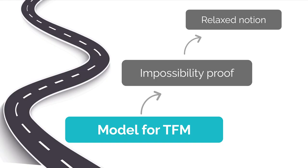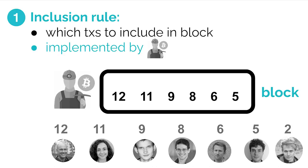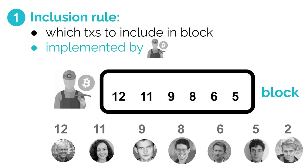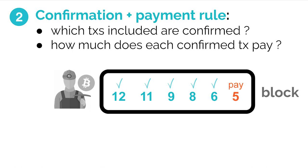Let me define the formal model. We have a set of users, each with a bid reflecting how much they're willing to pay for their transaction to be confirmed. A transaction fee mechanism requires an inclusion rule, which decides which bids to pick to include in the block. This rule is implemented by the miner, who is himself a strategic player. As an example illustrating the second price auction, the block size is six, you include six transactions, the top five are confirmed, and they pay the sixth price.